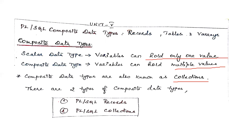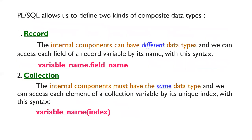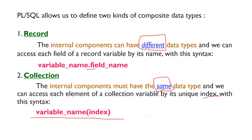Records have internal components that can have different data types. You can access individual fields using the record variable and field name with the dot operator syntax: variable_name.field_name. Collections, on the other hand, store elements of the same data type and are accessed using indexing — variable_name(index).